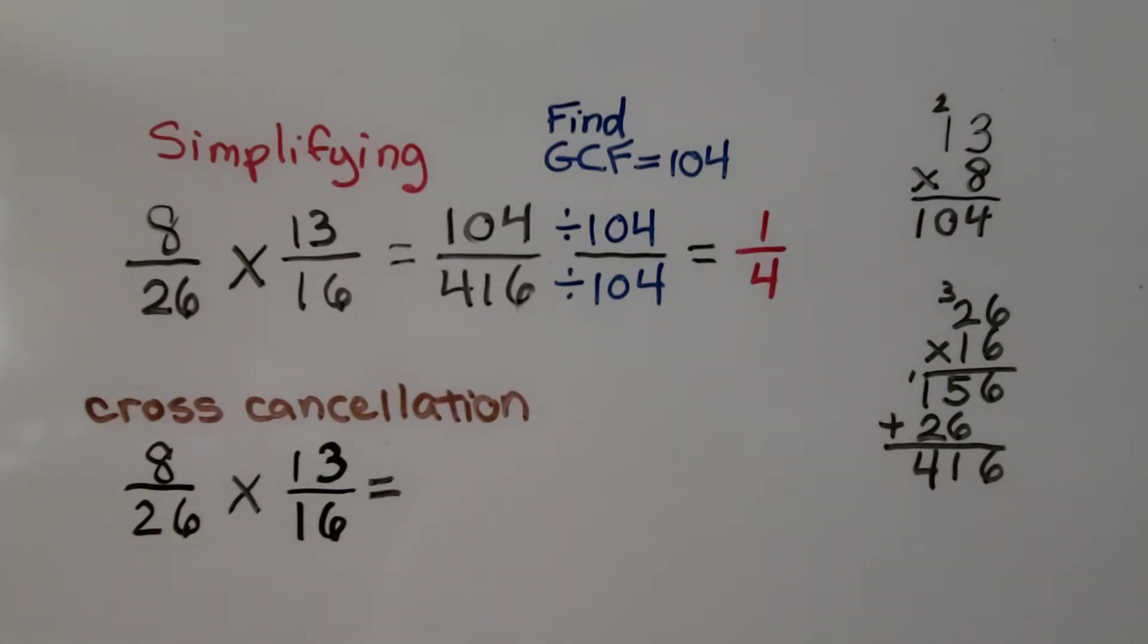Or we could use cross cancellation. Here we have an 8 and a 16. They have 8 in common, because 1 times 8 is 8, and 2 times 8 is 16. We look at 13 and 26. 13 times 2 is 26. So we can use the 13. 13 is 1 times 13. 26 is 2 times 13.